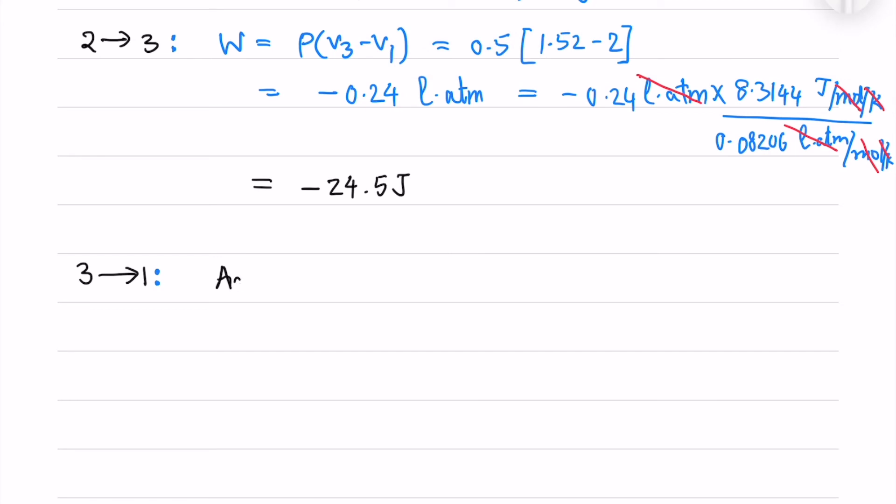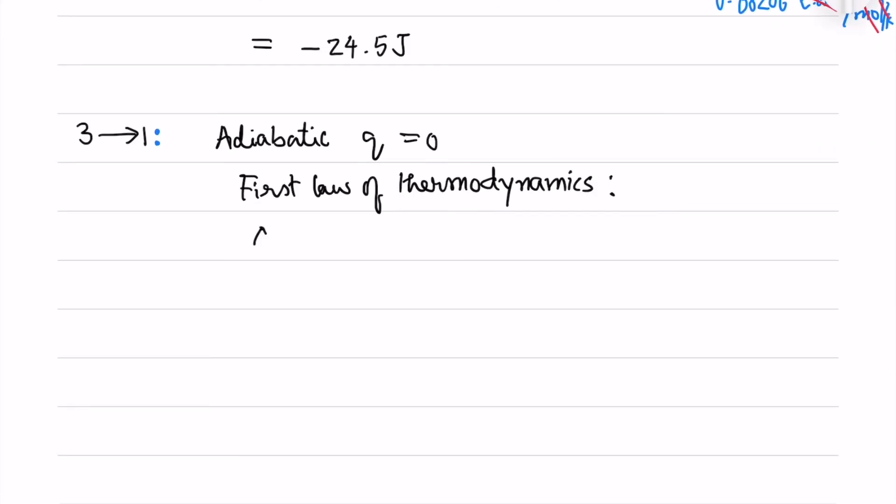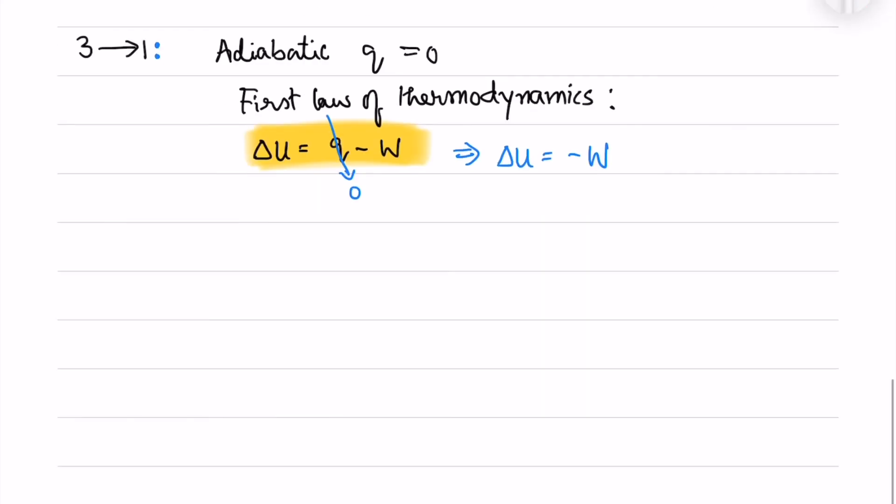Now for the adiabatic compression process the heat transferred is 0. So from the first law of thermodynamics for a reversible process, the work done is minus delta U. So I will use minus nCV times T1 minus T3.